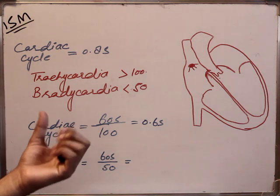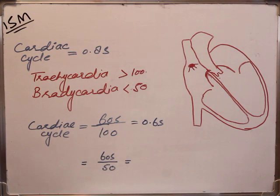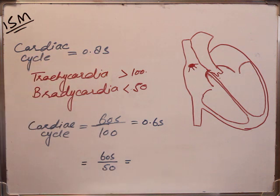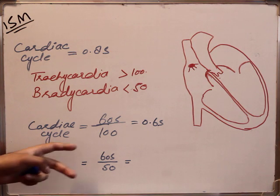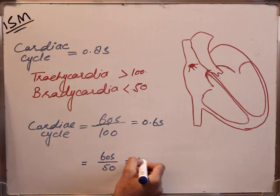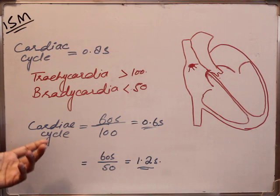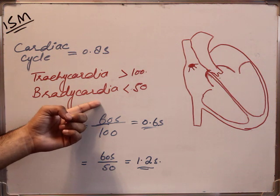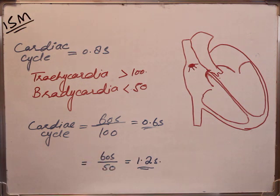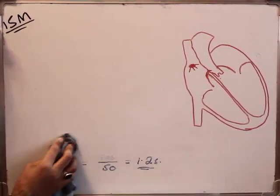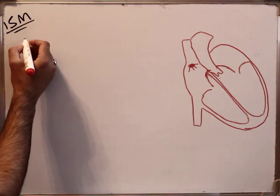In bradycardia, the heart contracts and relaxes taking more time than normal — more than 0.8 seconds, approximately 1.2 seconds. So in tachycardia the heart rate increases and the cardiac cycle decreases, and in bradycardia the heart rate decreases and the cardiac cycle increases. This is about the cardiac cycle.